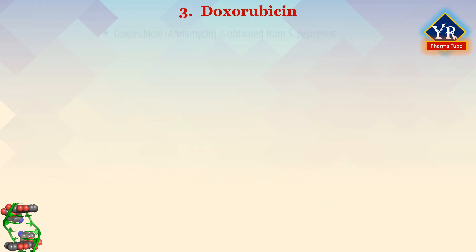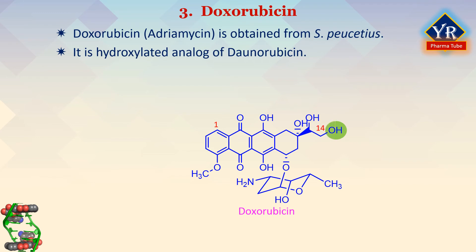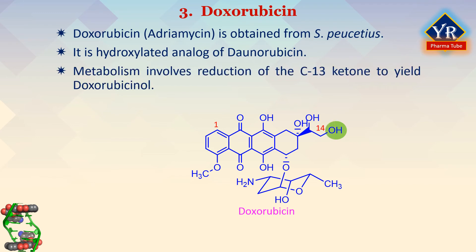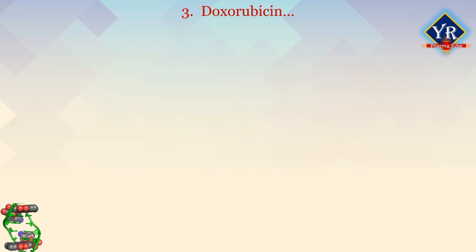Doxorubicin, originally named adriamycin, is an antibiotic obtained from cultures of Streptomyces peucetius in 1967. It is the hydroxylated analog of danorubicin. Metabolism involves reduction of the C13 ketone to yield doxorubicinol, an active compound, along with cleavage of the amino sugar to give the aglycone. The charged amino group attached to the sugar forms an ionic bond with the negatively charged phosphate groups of the DNA backbone, and structures lacking the amino sugar have poor activity. Doxorubicin hydrochloride is an orange-red hygroscopic crystalline powder, soluble in water and stored in airtight containers.